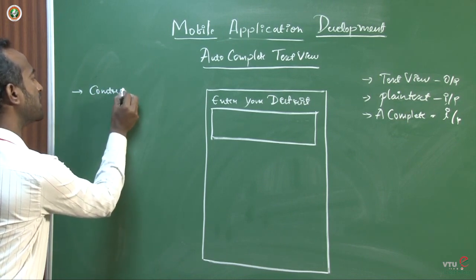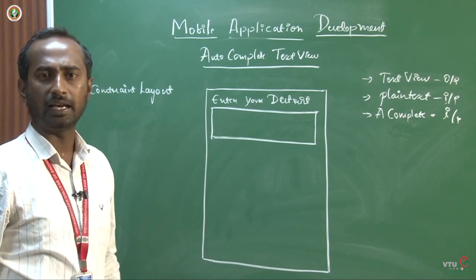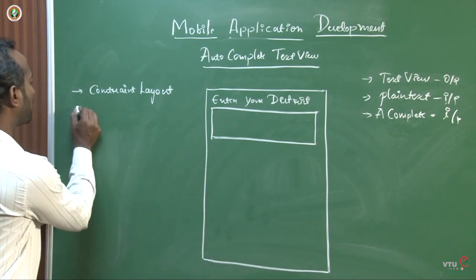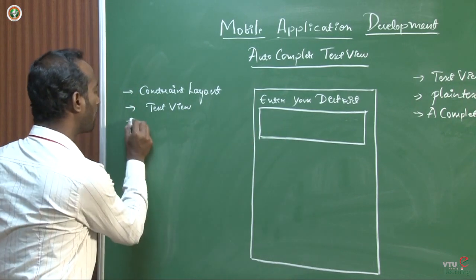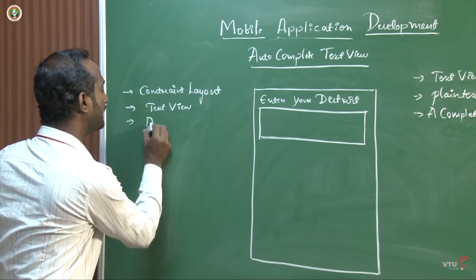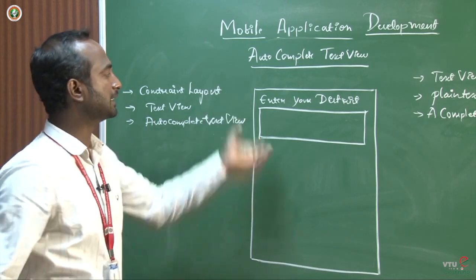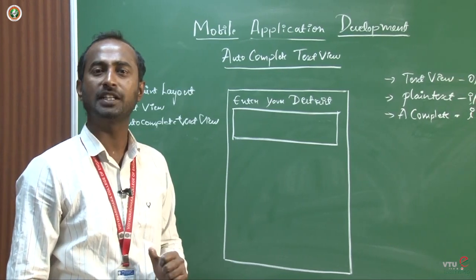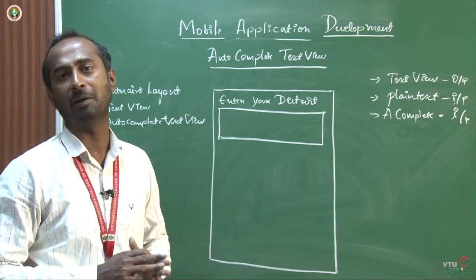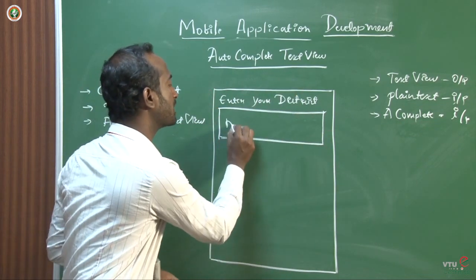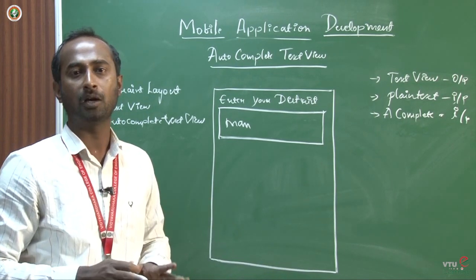I will go with constraint layout and use a TextView to display 'Enter your district', followed by an AutoComplete TextView box to read the district name. Once the user enters three characters, it must show the suggestion. That's the outcome of this application we are going to develop now. Let's start the demonstration.